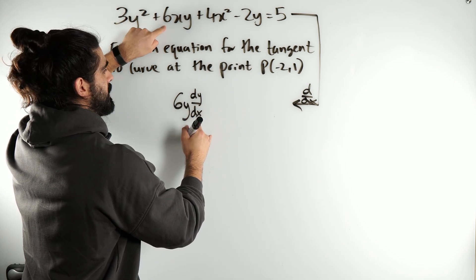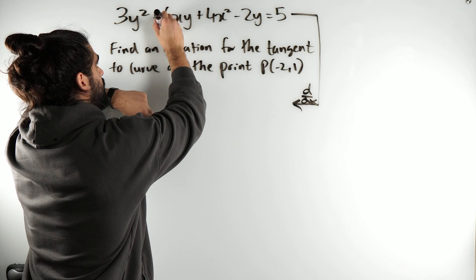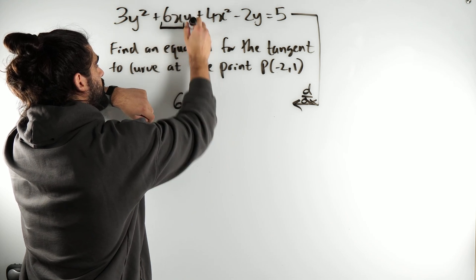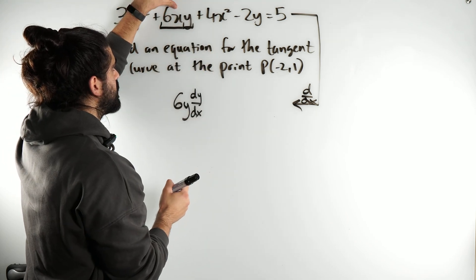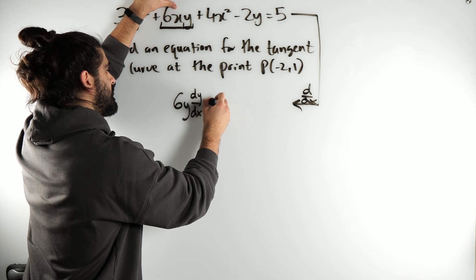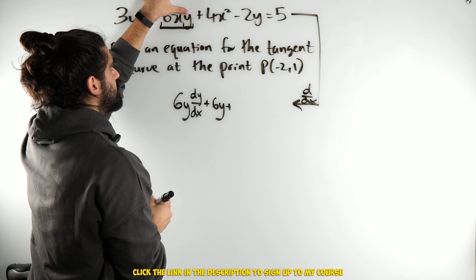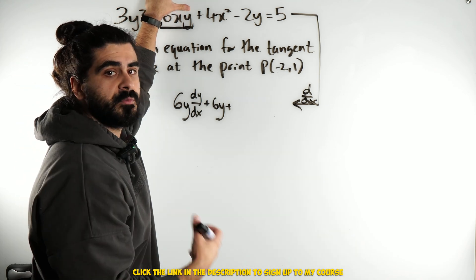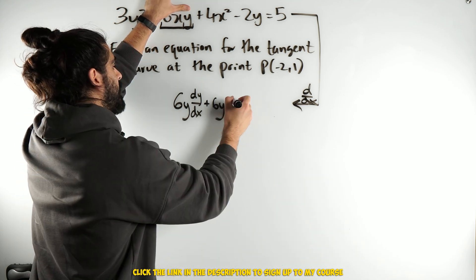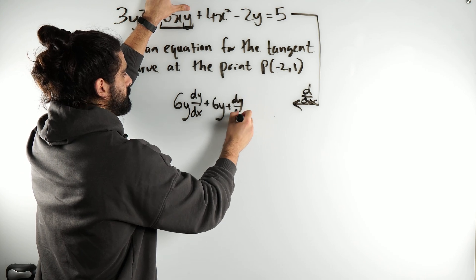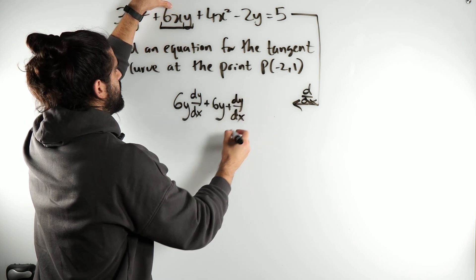Now here is a little bit different. We need to use the product rule. There are two terms here. Product rule really easy, differentiate the first term is 6 multiplied by the second term y plus. Differentiate the second term, y differentiates to 1 multiplied by dy dx, multiplied by the first term, 6x.